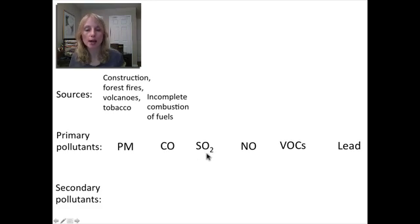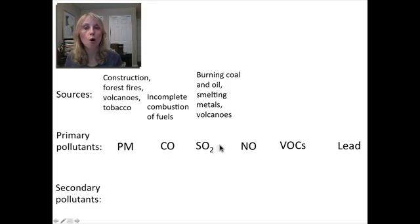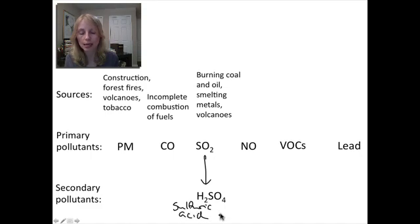Our next pollutant is sulfur dioxide. Sulfur dioxide comes from burning coal and oil, primarily coal, also from smelting metals and other industrial processes. Volcanoes are a natural source of sulfur dioxide. This molecule can also irritate the respiratory system, nose, and throat. When it reacts with the atmosphere, it forms sulfuric acid (H2SO4), which is formed when water vapor reacts with sulfur dioxide. It's a component of acid rain.